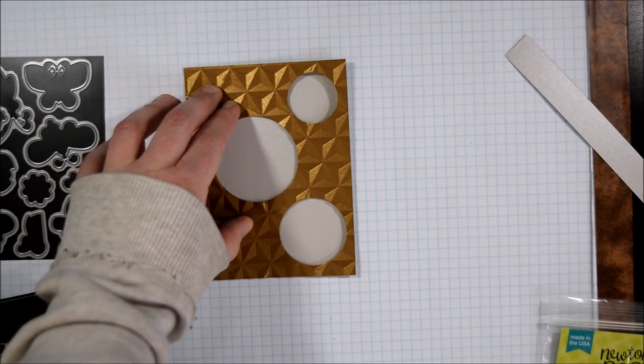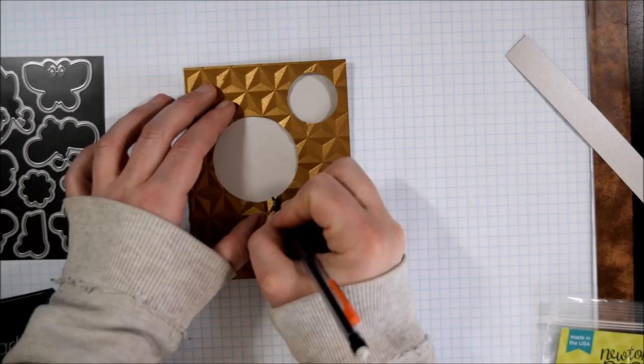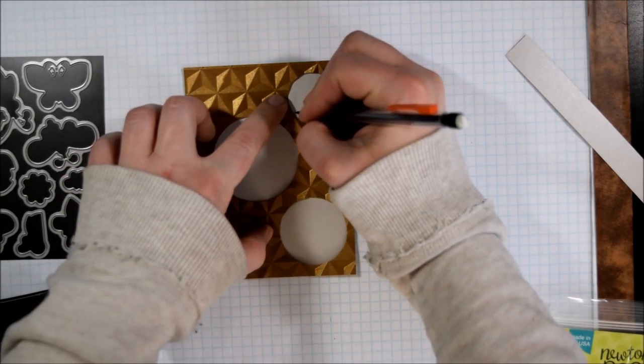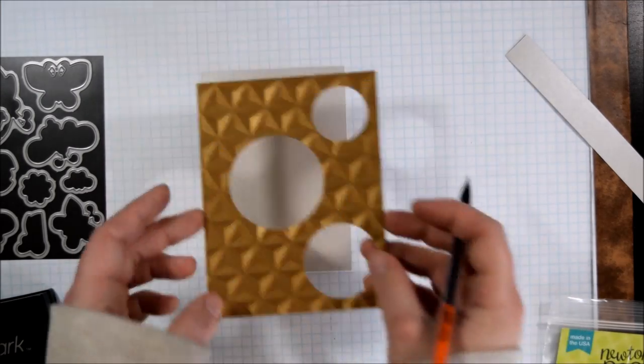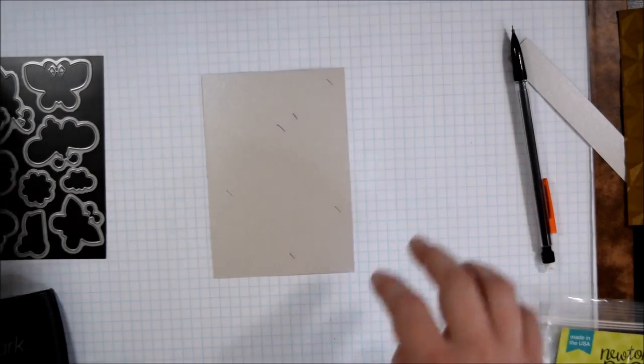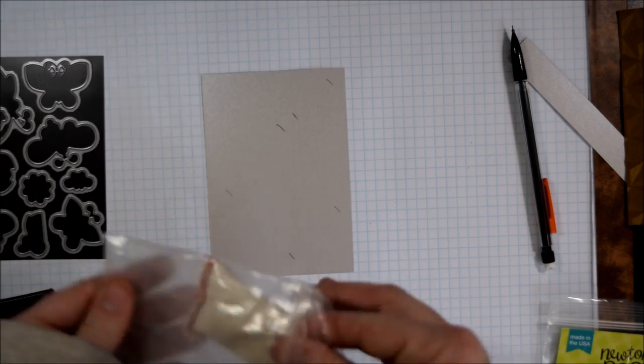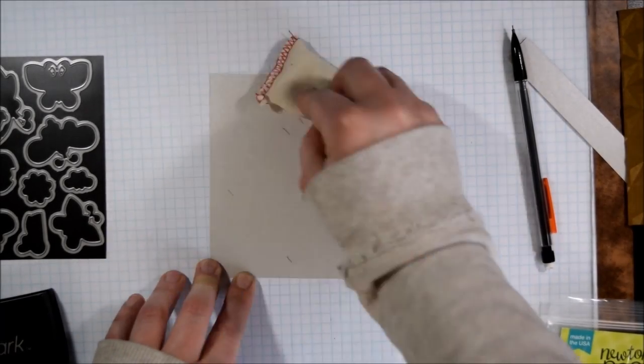I want my embossing to be really deep and I am using these Next Level embossing folders from We Are Memory Keepers and they are amazing. They give such great detail but I think that they look particularly great with these shiny metallic papers because it really brings out the depth of the embossing.